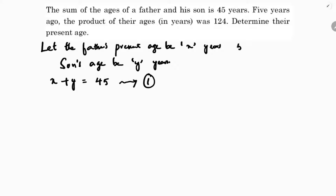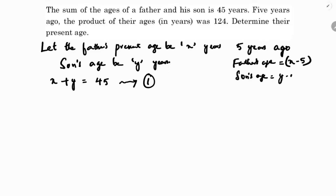Five years ago, the father's age will be x minus 5 and the son's age will be y minus 5. The given condition is the product of their ages, so the second equation is: x minus 5 into y minus 5 equals 124. From equation one, y equals 45 minus x.